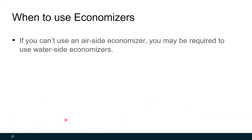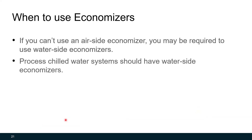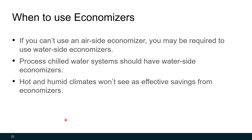If you can't use an air side economizer, you might be required to use a water side economizer. If you have a process chilled water system, you really should have a water side economizer, because those systems are almost always cooling. Note that with building cooling systems, when you can most take advantage of cooler outside air, you're often not cooling the building — and chilled water systems need to supply water at 44 degrees, which is much cooler than the 55 degree supply air of an air side economizer. In a process system like a data center, you're cooling equipment year-round, so a water side economizer makes great sense. Hot and humid climates really won't see effective savings from either type of economizer, which is why there's an exception in the energy code.